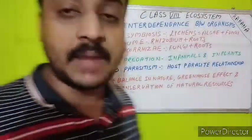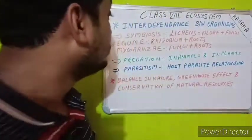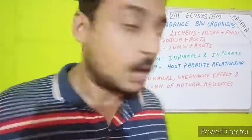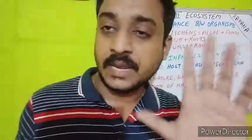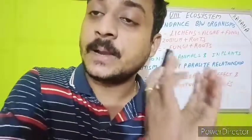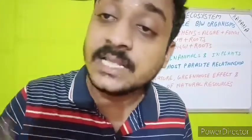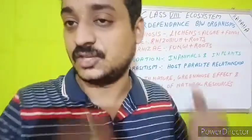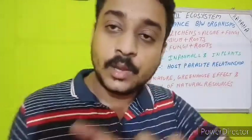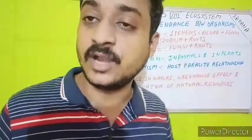Next is mycorrhizae, which is the association of fungi with roots. About 80% of all higher plants have this mycorrhizae association. Unlike rhizobium, which converts complex nitrogen into simple nitrogen, mycorrhizae converts complex minerals present in the soil into simpler minerals so the roots can absorb them. In return, the roots provide food and shelter to the fungi. In symbiosis — whether lichens, mycorrhizae, or legumes — both organisms are benefited and none is harmed.